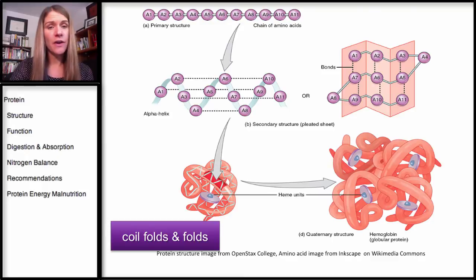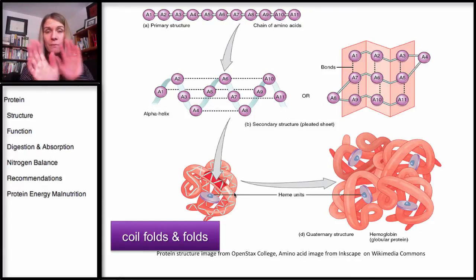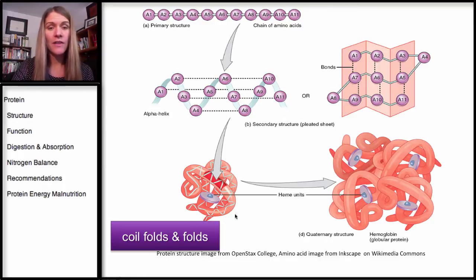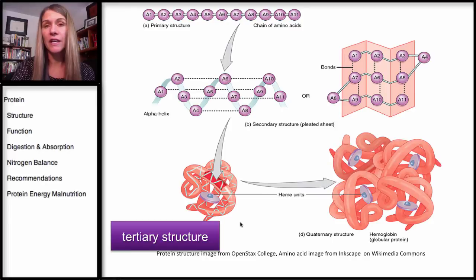Now, the tertiary structure is when you can take this coil or these sheets, and it then folds on itself. So if we have something that's coiled, but then that folds and then folds again, as you can see here, this is going to be our tertiary structure.